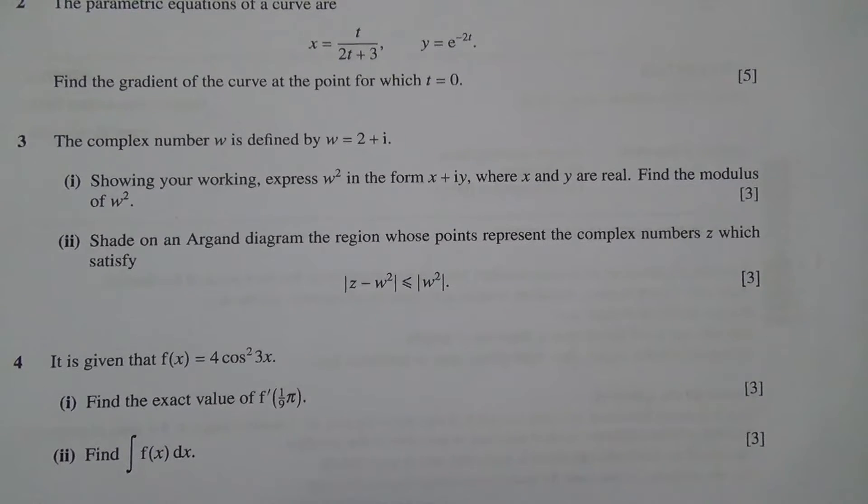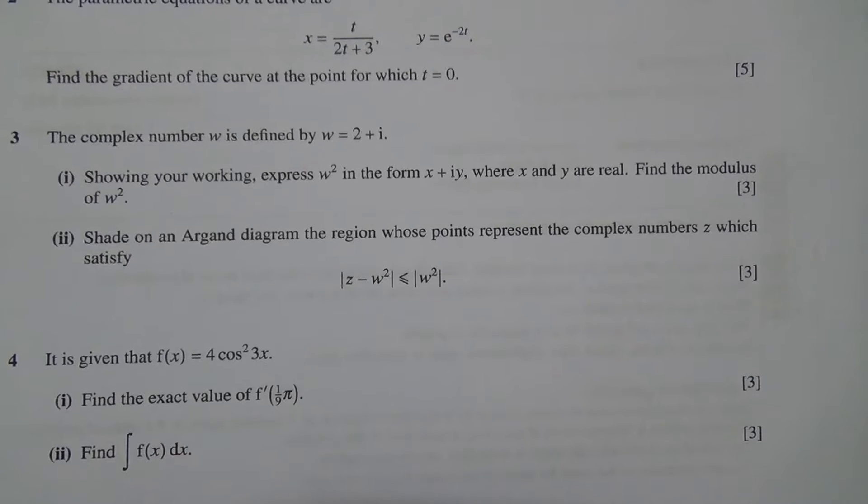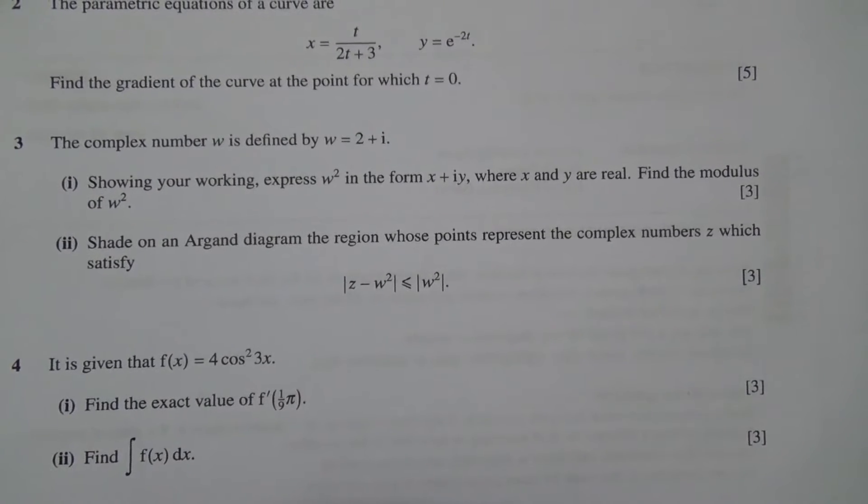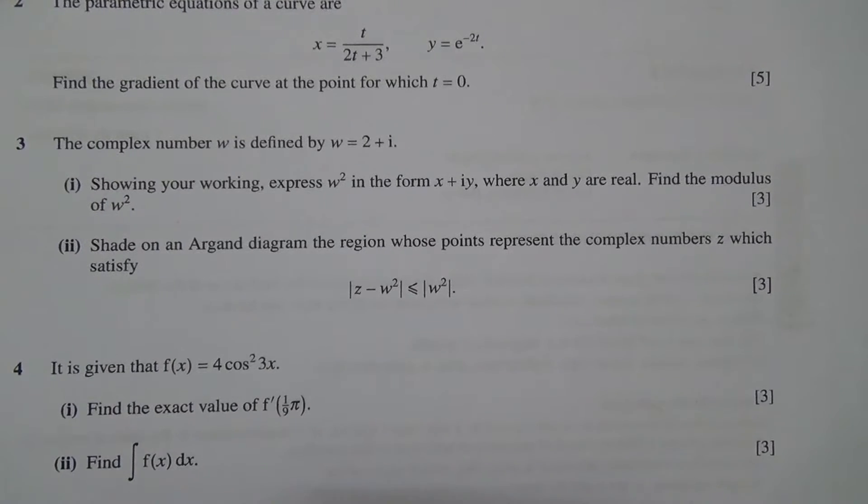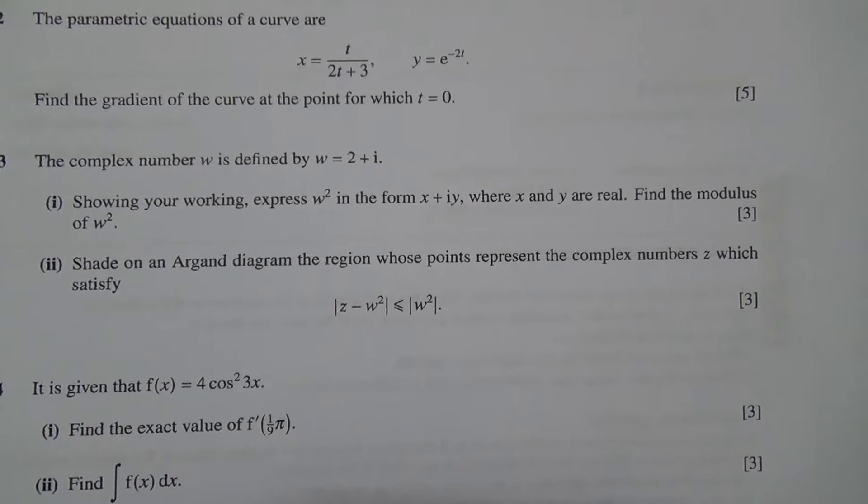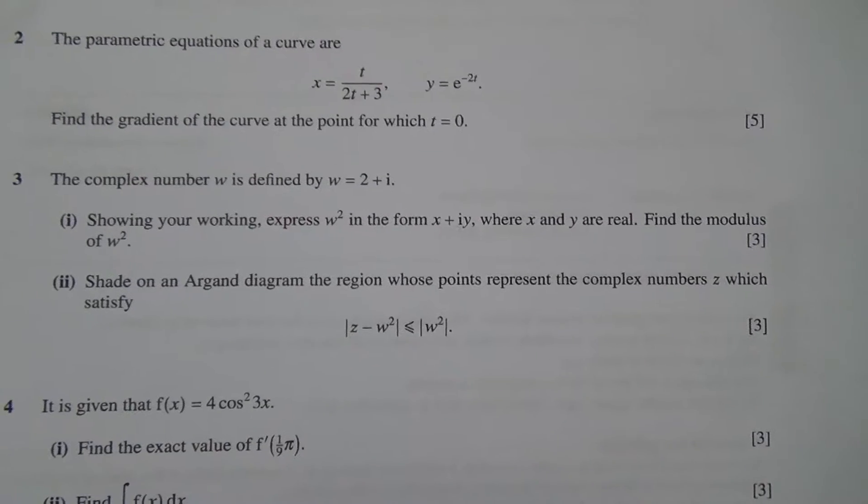Question number 3. The complex number w is defined by w equals 2 plus i. Showing your working, express w square in the form x plus iy where x and y are real. Find the modulus of w square. That's the first part.